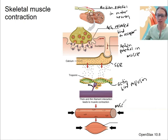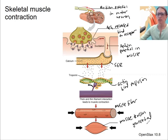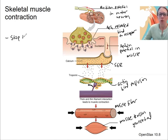A single muscle fiber shortens, generating muscle tension in the entire muscle. When we want to stop this, we want to stop it quickly — we don't want the muscle to slowly relax. One thing that's going to happen — and this is fairly obvious — is we're going to stop acetylcholine release.